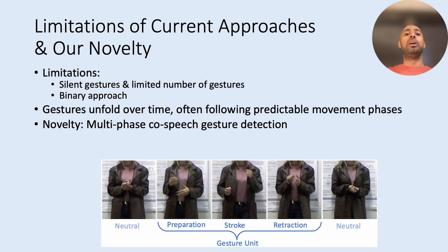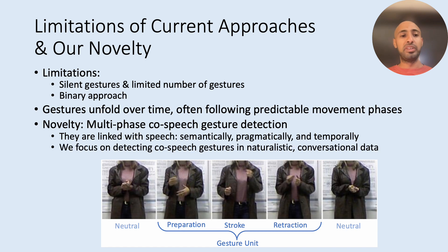So we have proposed a novel approach to reframe gesture detection as a multi-phase sequence labeling. And we focus on co-speech gestures, meaning that this kind of gestures, they don't have specific meanings or forms, but they can serve any functionalities and they can portray any meaning. And we focus on naturalistic conversational data.